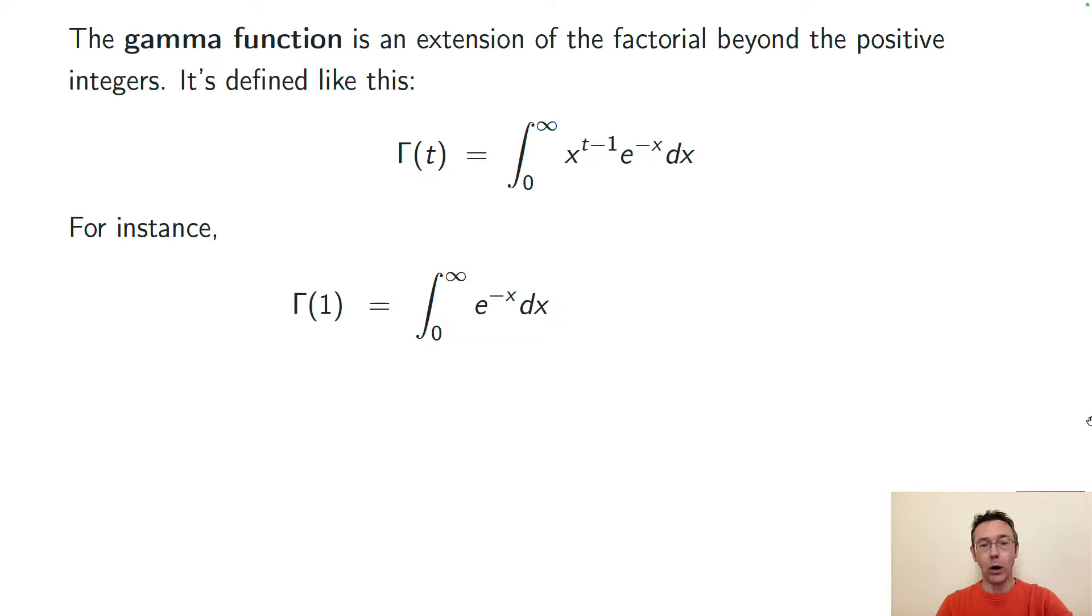For instance, gamma of 1 looks like the integral from 0 to infinity e to the negative x dx, and I'll do this one out by hand. This is an improper integral so we need to do it with a limit as r goes to infinity of that integral from 0 to r. We do the anti-derivative, plug in our limits of integration, and then take the limit as r goes to infinity to get gamma of 1 is 1.